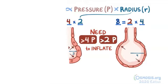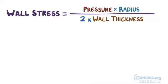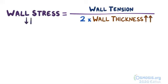Now a concept related to wall tension is wall stress, which uses a modified version of Laplace's law that factors in the thickness of the wall. The equation for wall stress is pressure times radius over 2 times the wall thickness. Based on this equation, wall stress is wall tension divided by 2 times the wall thickness. So the thicker the wall, the less wall stress.